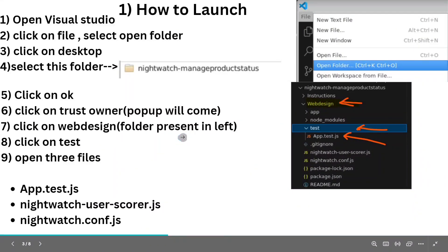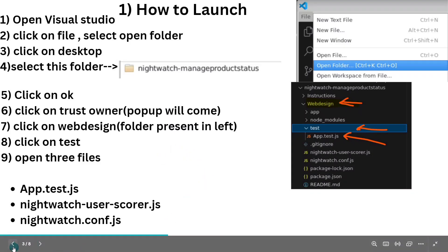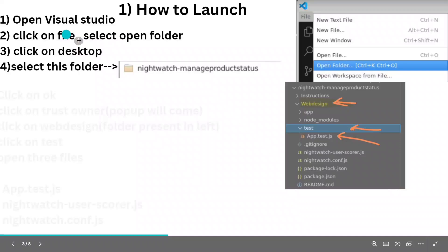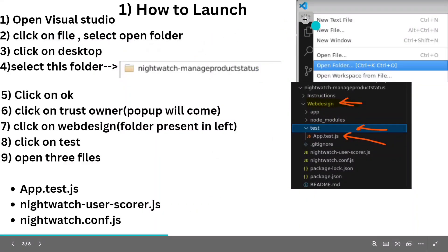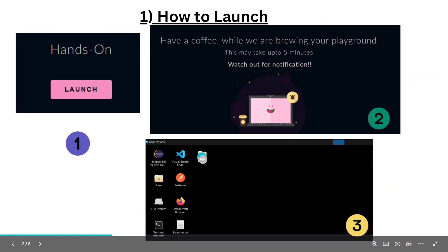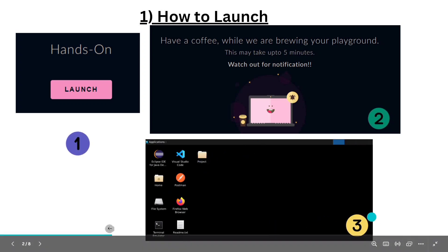After launching, we have to add our project so we can start our code. You will see a Visual Studio icon — double click on it to open Visual Studio. Then click on File at the top, click on Open Folder, and go to the Desktop because the project is present there. Click on the project folder and open it.